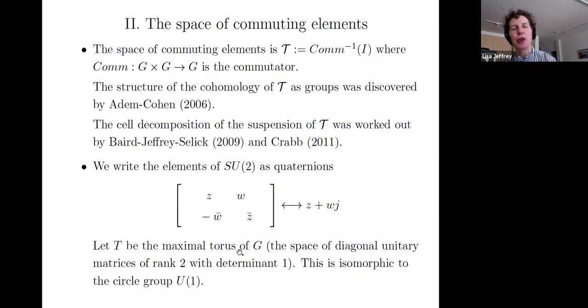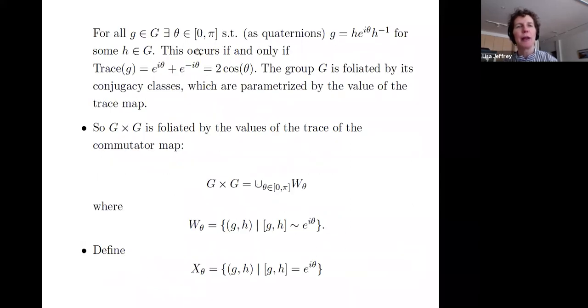Let me denote by T the maximal torus of SU(2), which is the circle group. So for all g, there is a theta for which g is conjugate to e to the i theta. We're taking theta from 0 to pi. The elements where theta is from pi to 2 pi are reached using the Weyl group. So this occurs if and only if the trace of g is equal to 2 cosine theta.